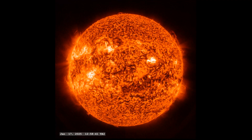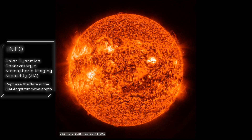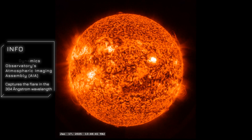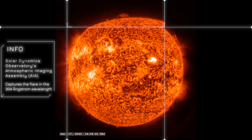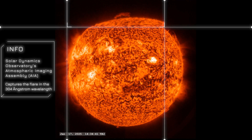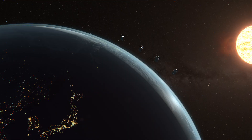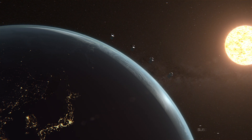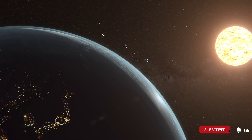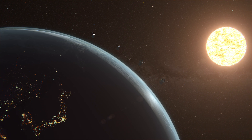Finally, the 304 angstrom filter presents the chromosphere and transition region of the sun, highlighting cooler plasma around 50,000 Kelvin. This perspective reveals the surge of material and dynamic flows resulting from the flare, offering insights into mass motions on the sun's surface. Such activity can lead to coronal mass ejections — CMEs — massive bursts of solar wind and magnetic fields that, when directed toward Earth, can induce geomagnetic storms affecting power grids and communication networks. Studying these events enhances our ability to predict and prepare for such impacts.